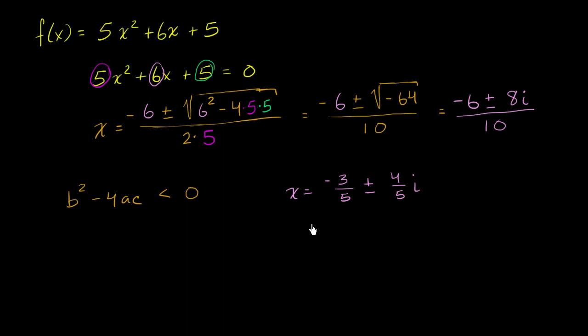So the two non-real complex roots are x equals negative 3 fifths plus 4 fifths i, and x equals negative 3 fifths minus 4 fifths i.